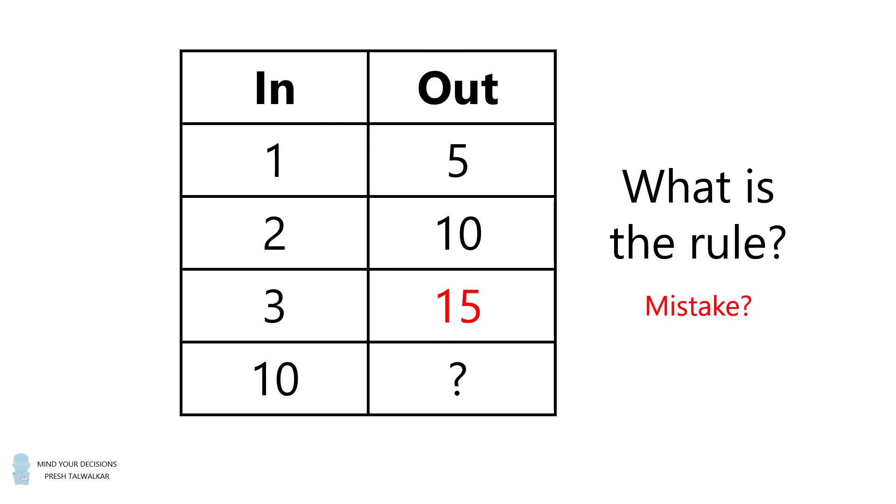However, I don't think we can just say that it's a typo. But forget for a moment that this question was given to eight-year-old students. Just consider that we have this set of inputs and this set of outputs and we want to determine a rule between them. What could the rule be and what would the output value for 10 be?